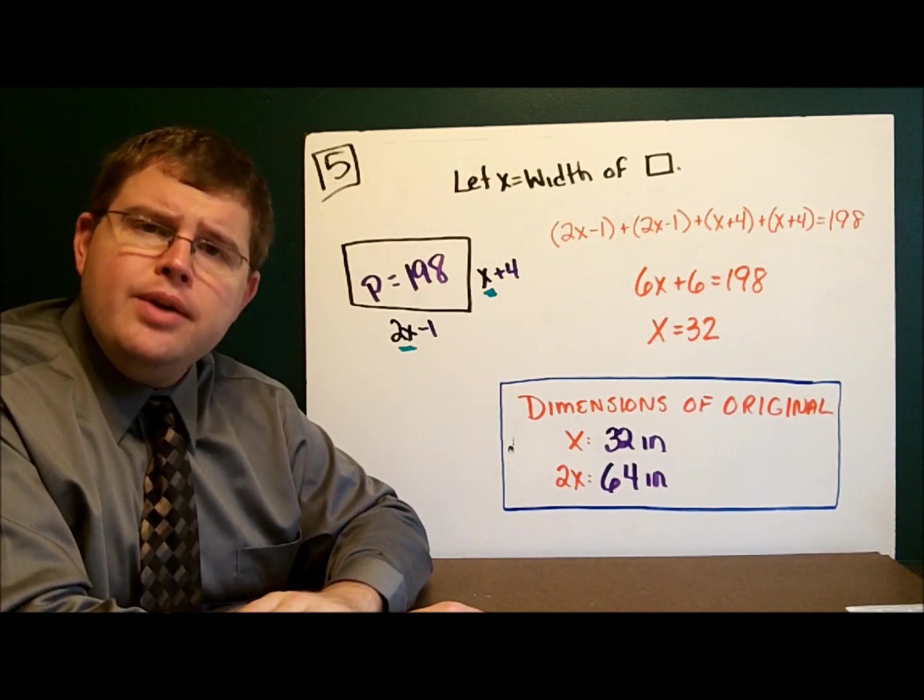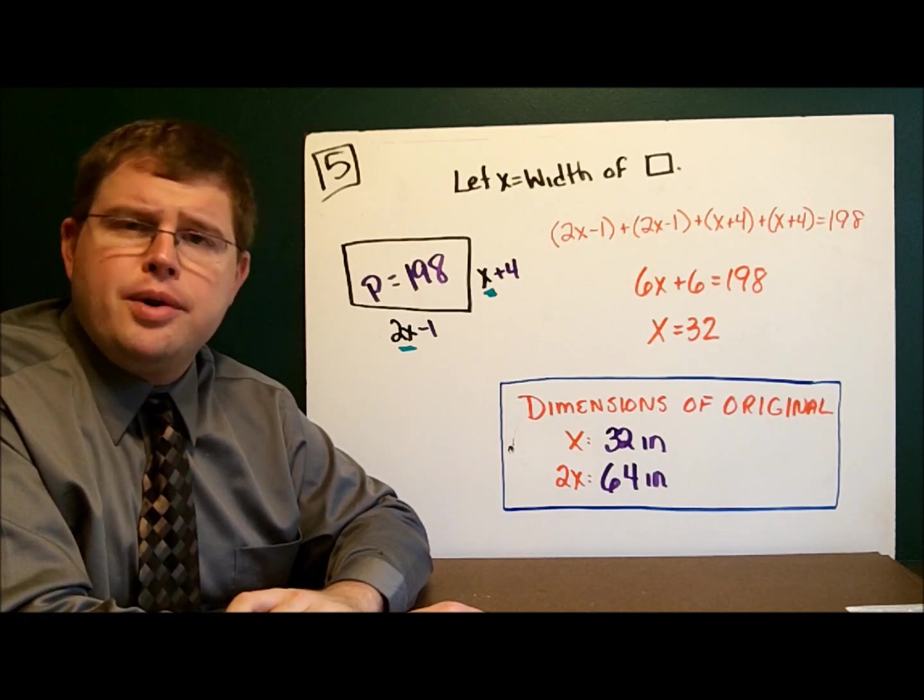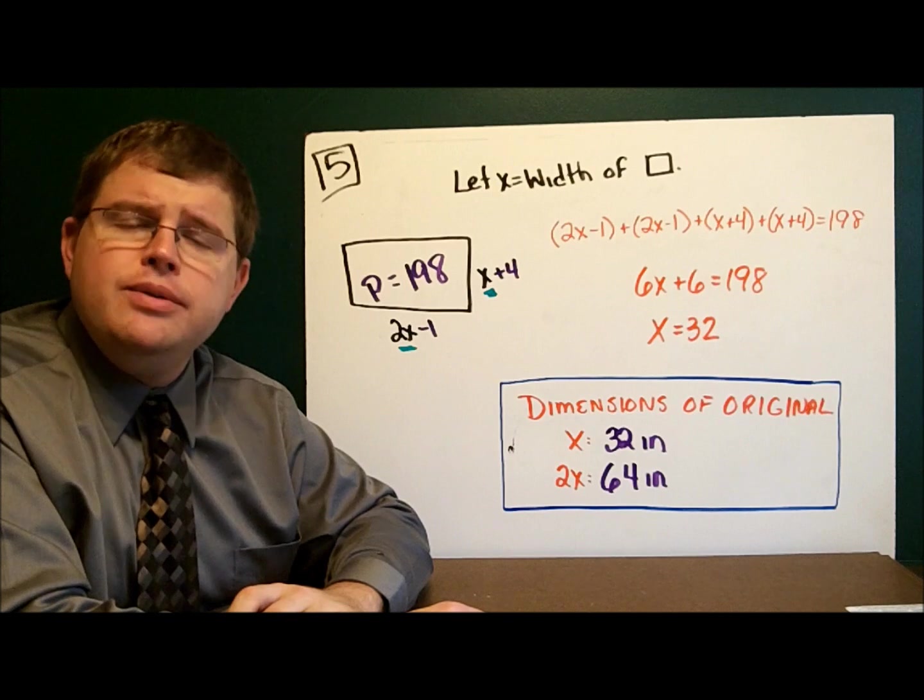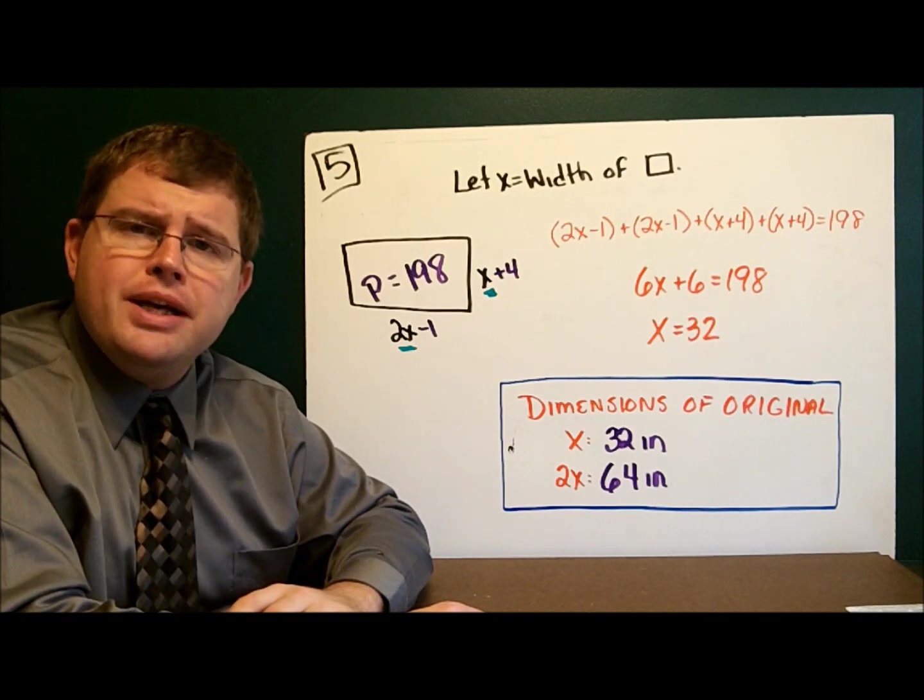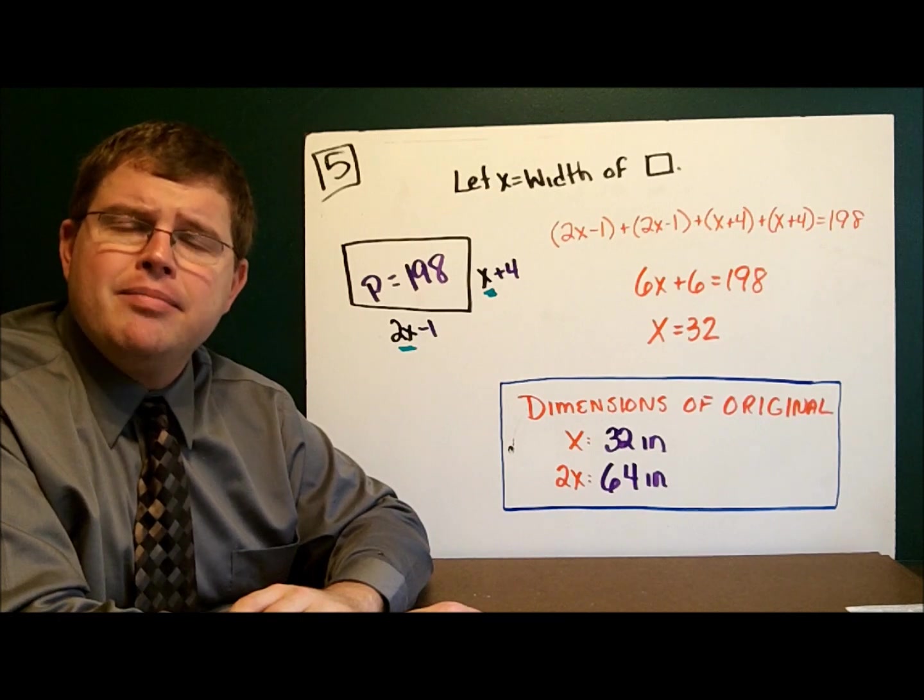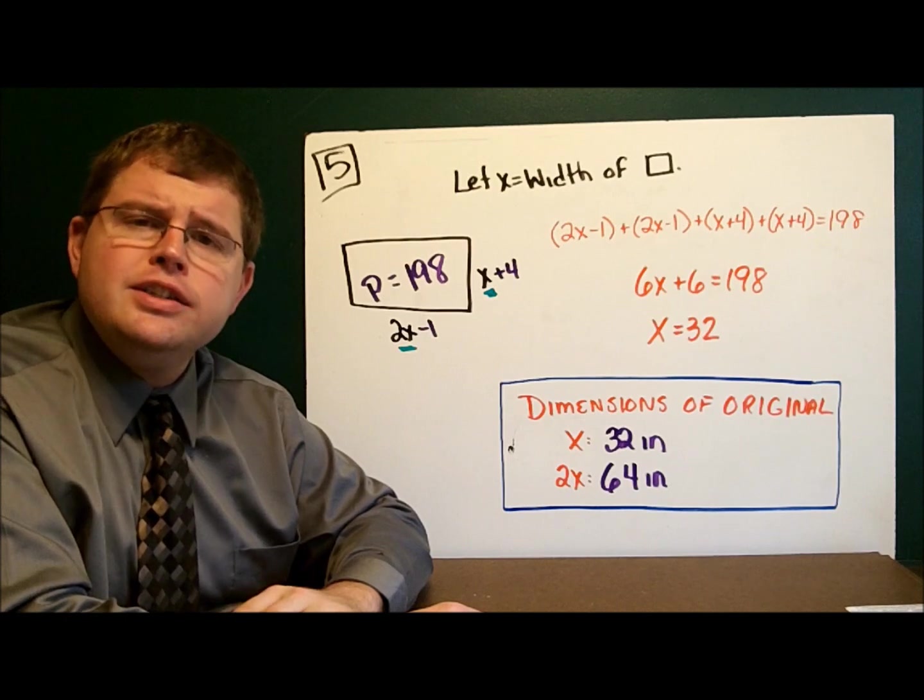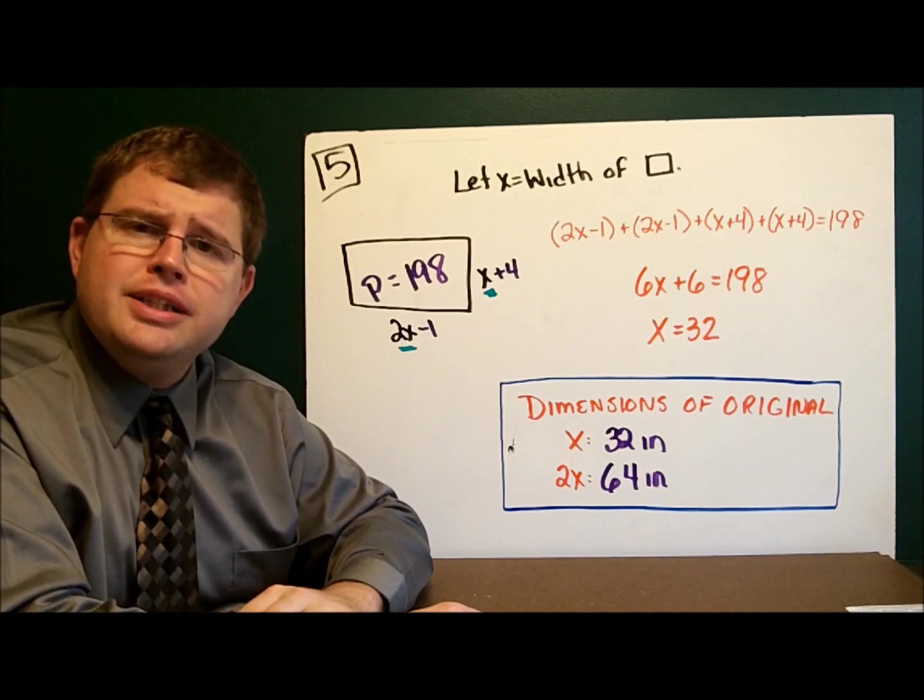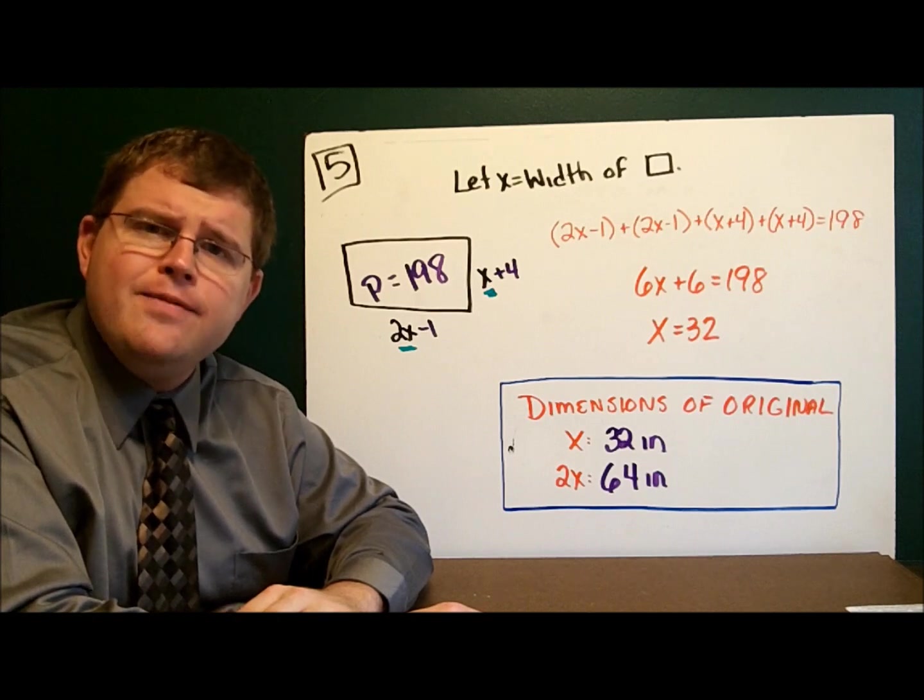So, in summary, when you have a word problem involving perimeter, always read the problem two or three or four times. Once you know what you have and what you're looking for, then go ahead and draw your picture and write your let statement. Then write your equation using the lengths of the sides and the perimeter, solve, and then answer the question that's being posed. And that's how you work with word problems involving perimeter.